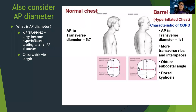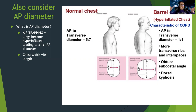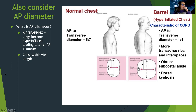We also consider AP diameter. In patients with COPD, they can develop what's called a barrel chest. Normally the front-to-back distance differs from the side-to-side distance, but COPD patients can develop a one-to-one diameter — their chest expands outward as air gets trapped because they have trouble exhaling, resulting in equal width front-to-back and side-to-side. You can see this in the picture.